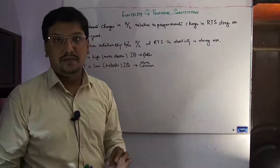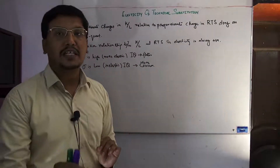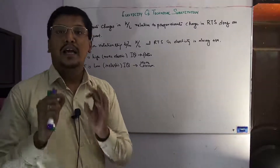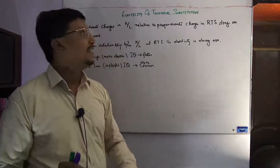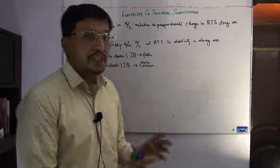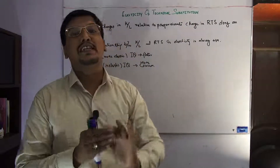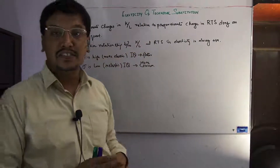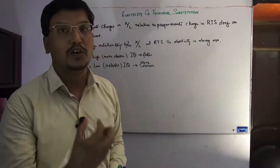If we look at a point on the isoquant and move to another point, we examine the slope — the rate of technical substitution. If we change the RTS, then the capital-labor ratio changes accordingly. Understanding this relationship is our focus, and we will try to express it in the formula for elasticity.